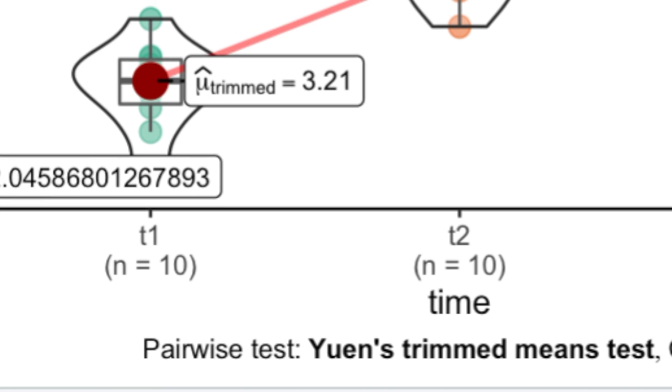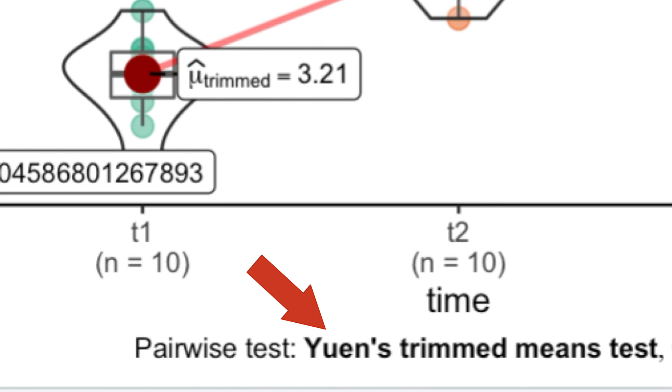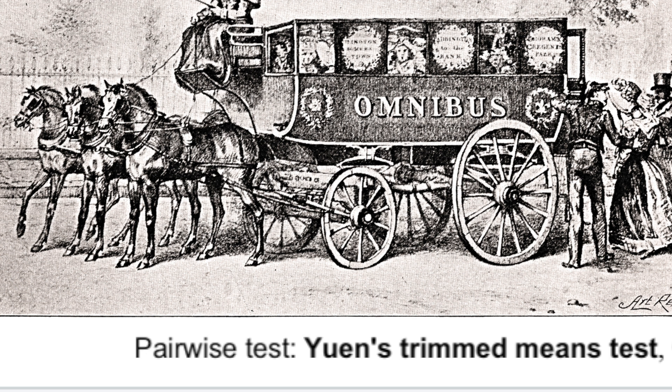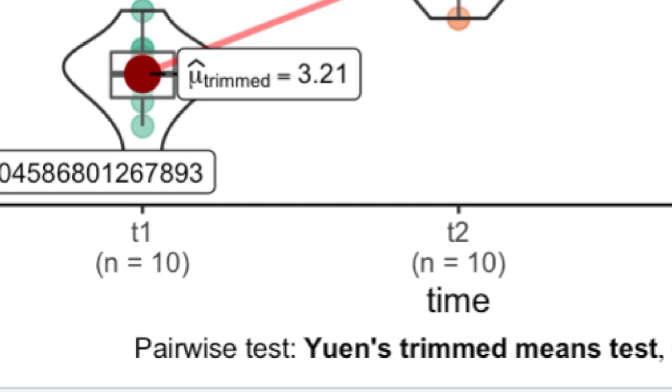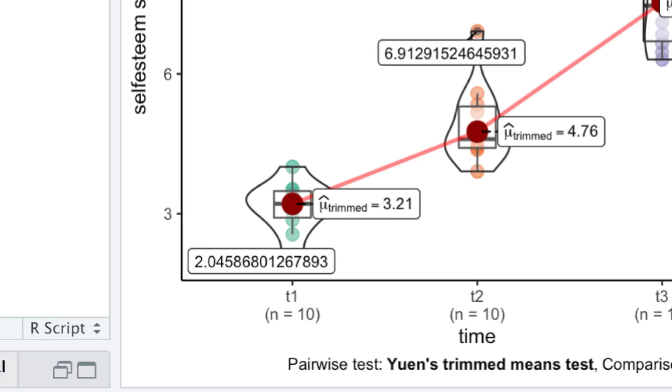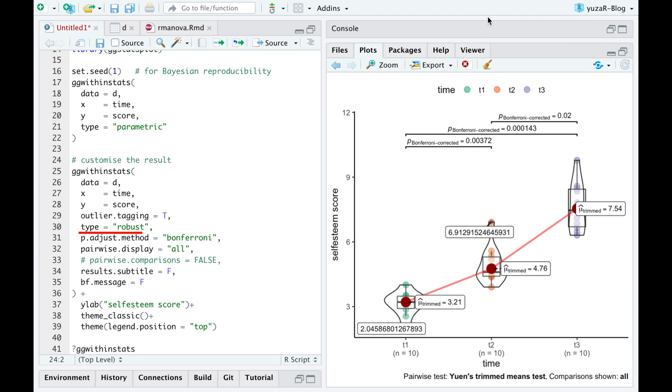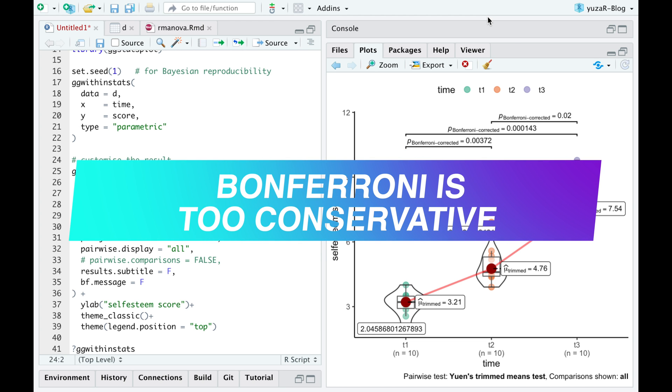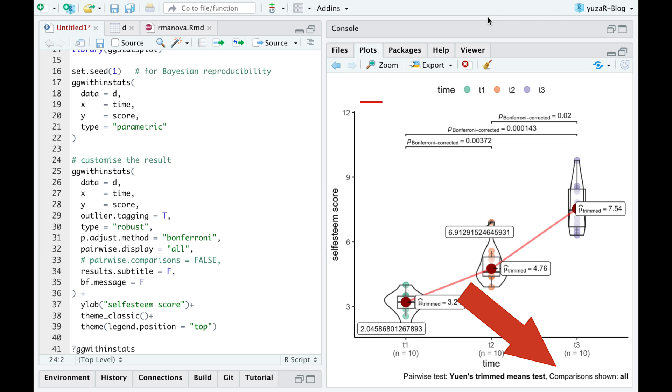Here again, the function automatically uses correct pairwise tests for every omnibus test, and corrects p-values for multiple comparisons with a Holm method, which you can easily change to a more famous Bonferroni correction for multiple comparisons, but I wouldn't recommend it, because Bonferroni correction is too conservative, and we could miss some interesting result.